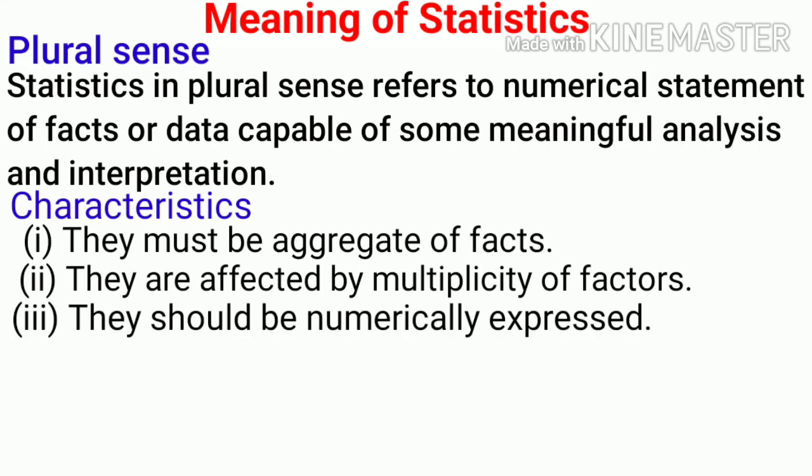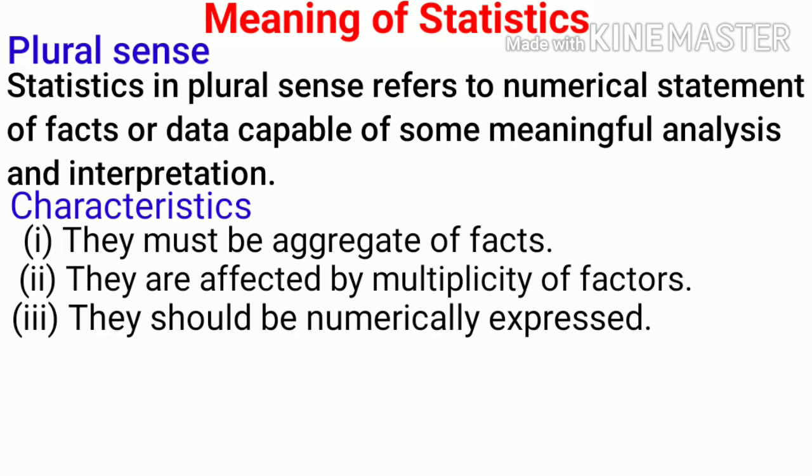The third characteristic is they should be numerically expressed. Statistics which we will consider must be in numerical numbers. If there is a qualitative statement like 'population of India is rapidly increasing,' this is a qualitative statement. It does not use any numbers, so it is not statistics. Similarly, 'production of rice is not sufficient' is also a qualitative statement with no numerical numbers used, hence it does not form statistics. On the other hand, 'population of India in the terminal year of the 7th plan is 803 million' is a statistical statement. Why? Because 803 million, which is a number, has been used.